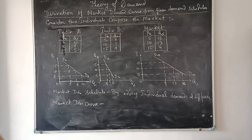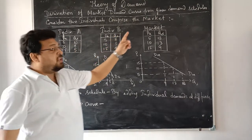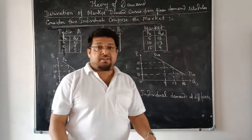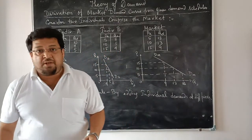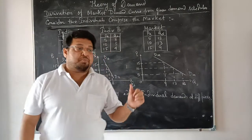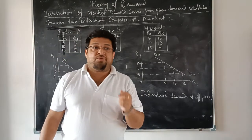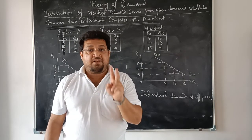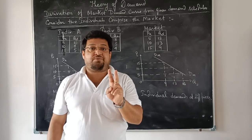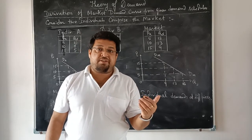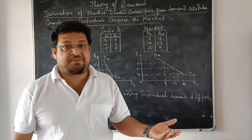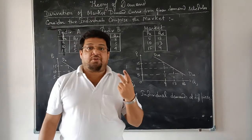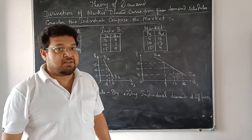Next, we come to the derivation of the market demand curve from given demand schedules. In the market there are so many individuals, so we cannot take so many individuals to put into theory. So we assume that there are only two individuals comprising the market. Whatever happens for two individuals can be generalized for many individuals — the process remains the same.